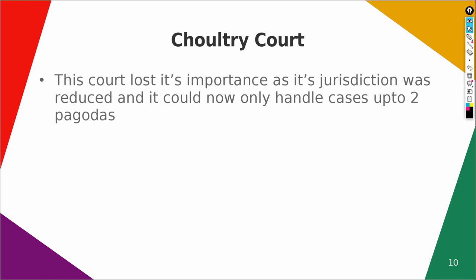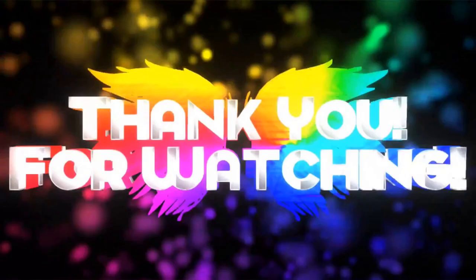Now let us see what happened to the Chaultry Court. As we have seen, the Chaultry Court was an important institution in the first and second phases of judicial administration. But in the third phase, this court totally lost its importance — nobody used to come to it because its jurisdiction was reduced so drastically. It could now only handle cases up to 2 pagodas, whereas earlier it could handle cases up to 50 pagodas. Due to this drastic reduction in jurisdiction, it lost all its importance and significance.